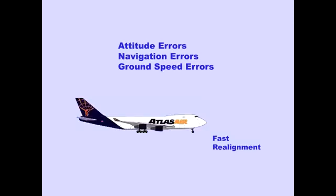To remove the accumulated IRS attitude, navigation, and ground speed errors, a fast realignment mode is available. This mode is available only when the airplane is parked.